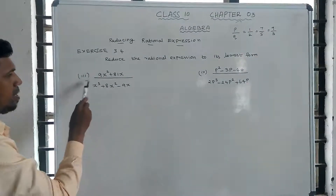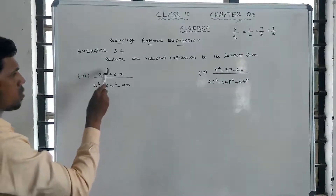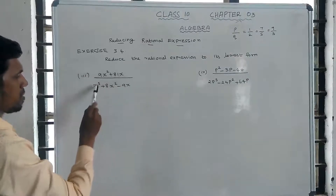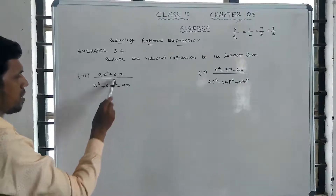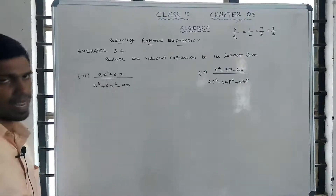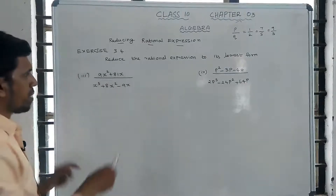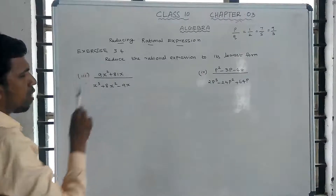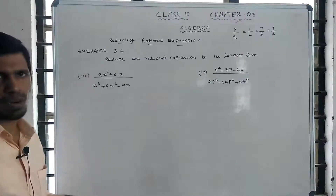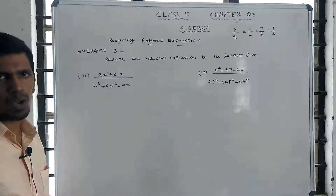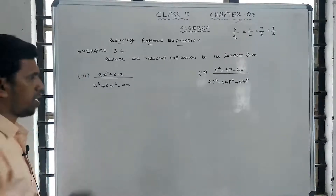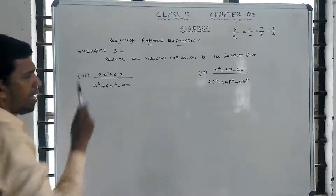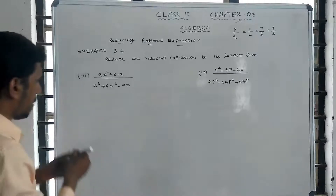Solution 3: 9x squared plus 81x divided by x cubed plus 8x squared minus 9x. Looking at the numerator and denominator, 9 and x are common factors.